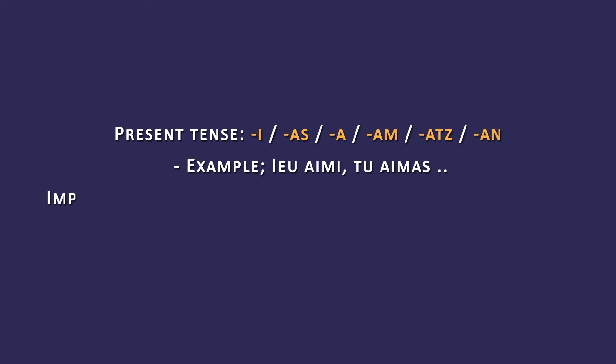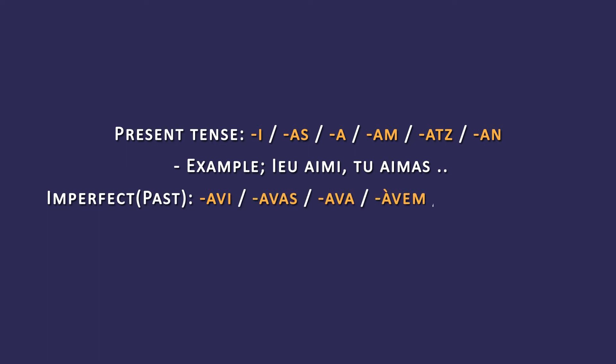In the imperfect tense, or a form of past tense, the endings are: abi, abas, aba, abem, abets, and aban.